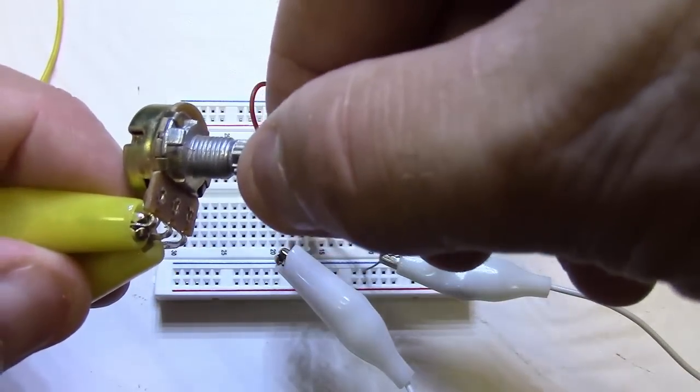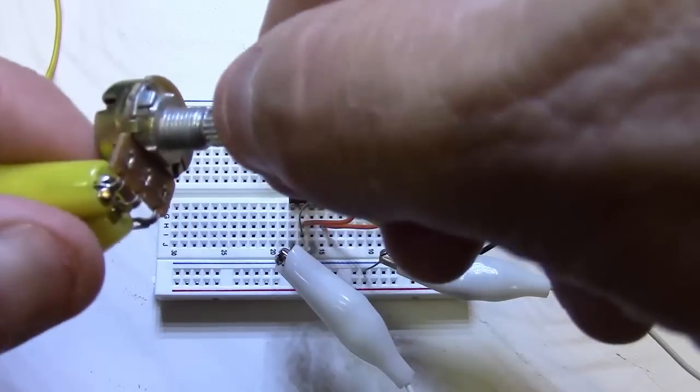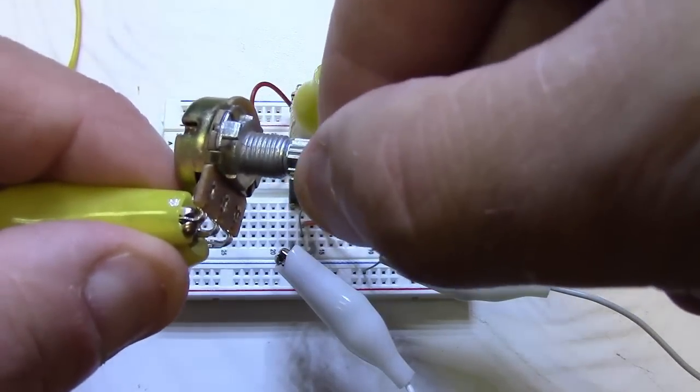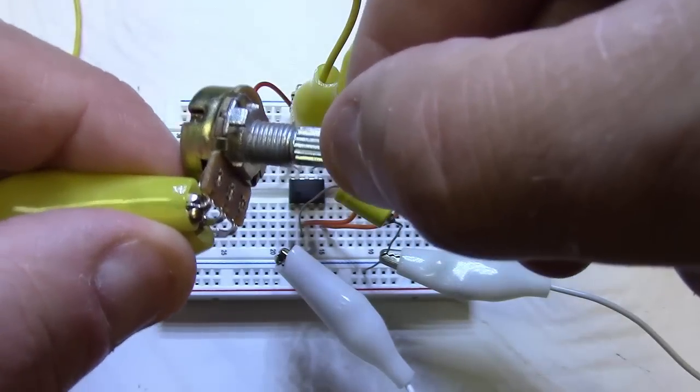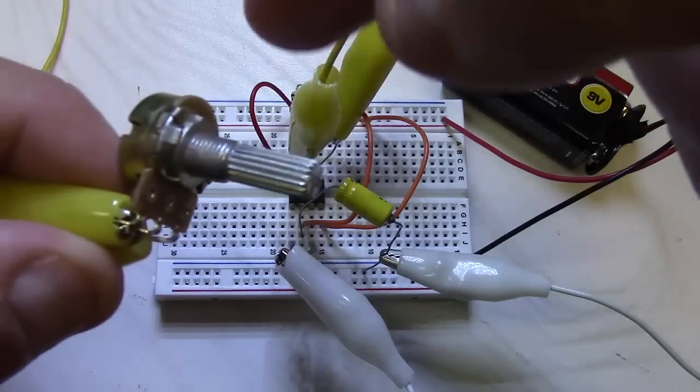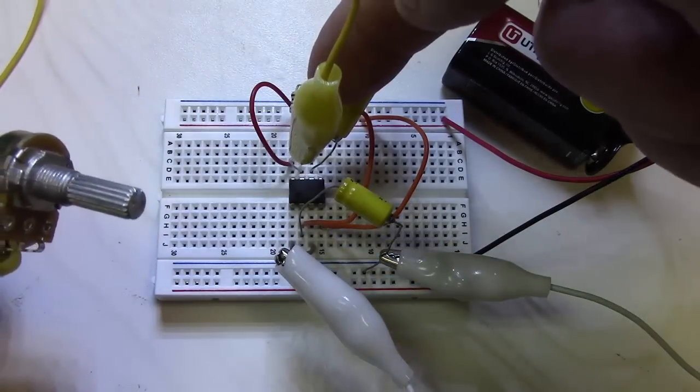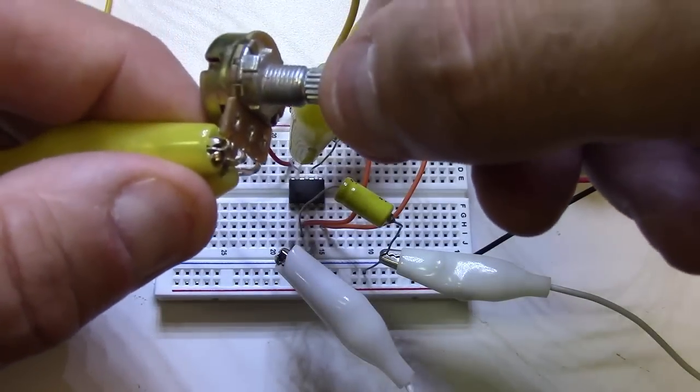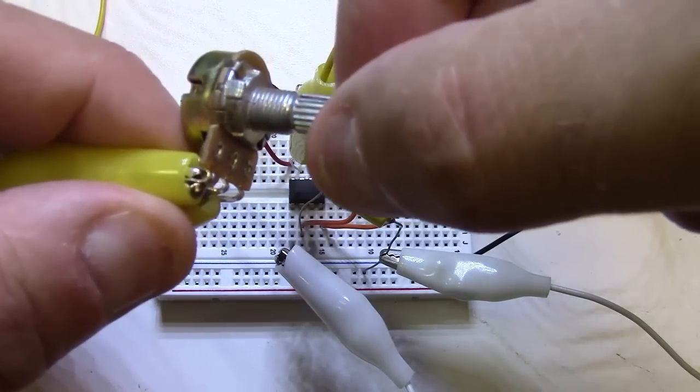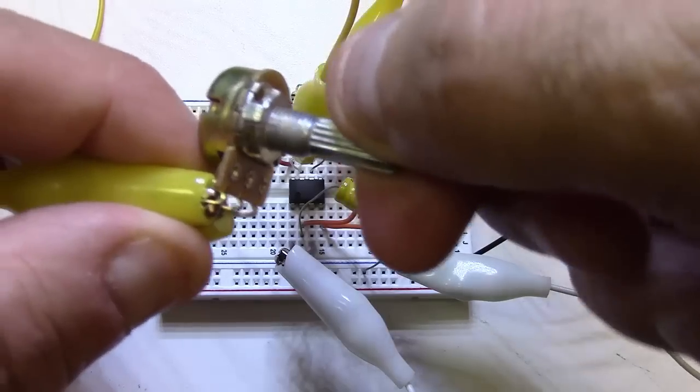There we go, I just hooked that up and I can adjust my frequency now. I should have a pretty good square wave until I get to the real high frequencies, because once this resistor resistance gets really low and it's comparable to the 1K we have here, then we start losing our duty cycle.